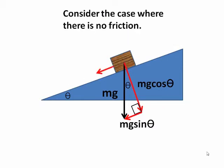So consider the case then where there is no friction. We have mg sin theta acting down the incline, and that's the only force acting in the direction of the motion.